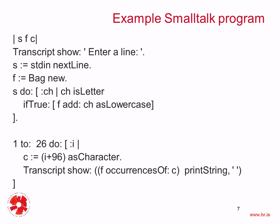Let's look at an example Smalltalk program. The first line is just a declaration of variables, but notice that they have no type. We are just declaring S, F, and C — announcing that S, F, and C will be used in the code below. They don't have any type because Smalltalk is dynamically typed. The first statement says: Transcript show: 'Enter a line.' — where 'Enter a line' in quotes is a string.